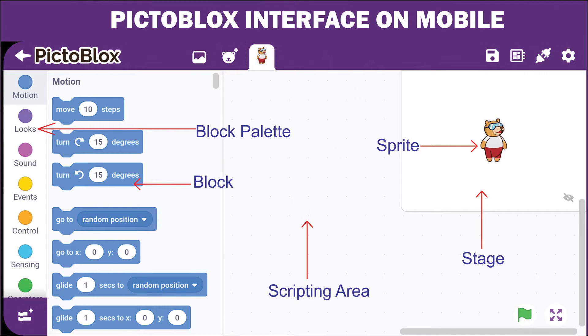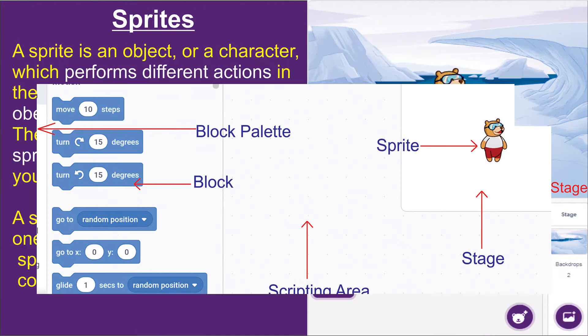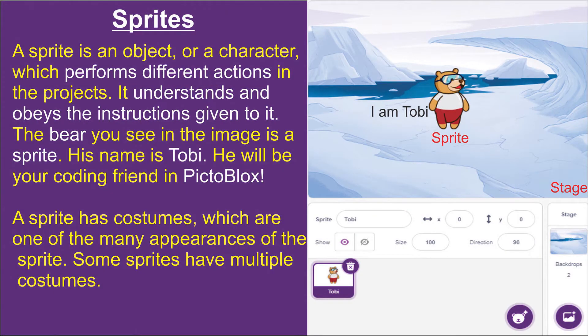Now we will see what a sprite is. A sprite is an object or a character which performs different actions in the project. It understands and obeys the instructions given to it. The bear you see in the image is a sprite — his name is Toby. He will be your coding friend in PictorBlock. By default in PictorBlock, we have a sprite named Toby.